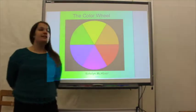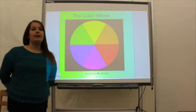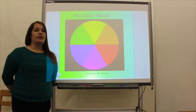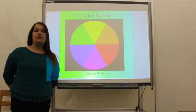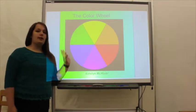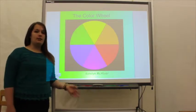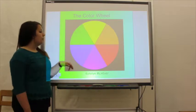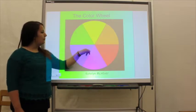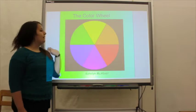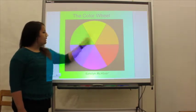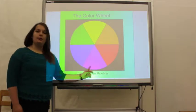Good morning, everybody. Today we're going to be talking about the color wheel. This is for first grade students, and we're going to talk about the basic colors — the primary colors, which are blue, yellow, and red, and the secondary colors, which are green, orange, and purple.